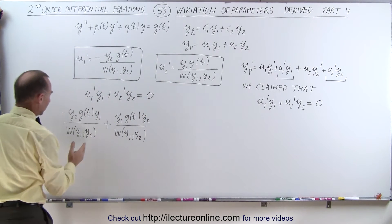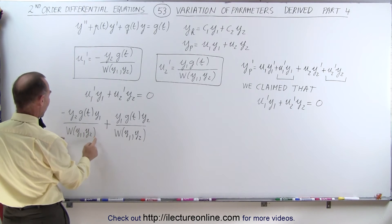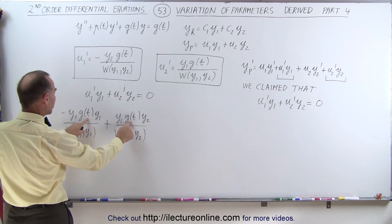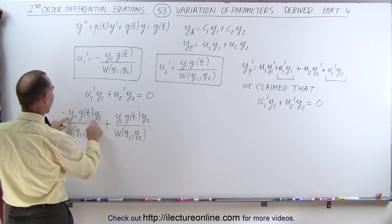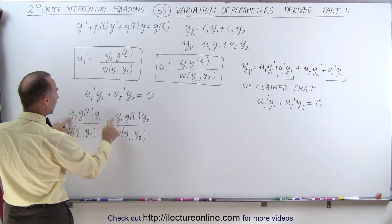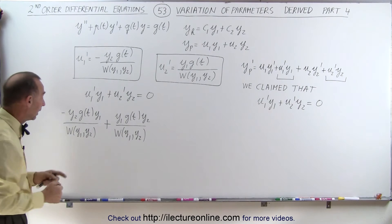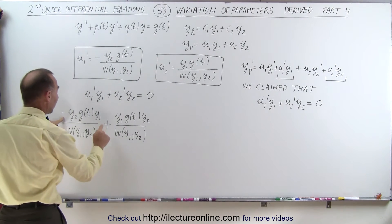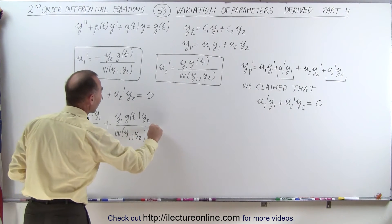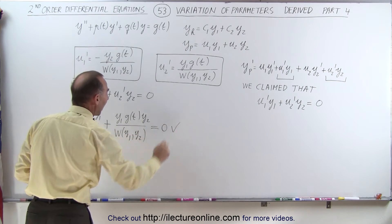Now notice, this term right here, we have the Wronskian on the denominator, g of t, and both are multiplied in the numerator by y2 and y1, y1 and y2 just in a different order. But you can clearly see that those two are equal, and since this is negative and that is positive, we can see that this does indeed add up to zero.